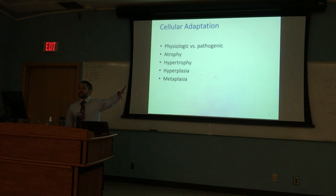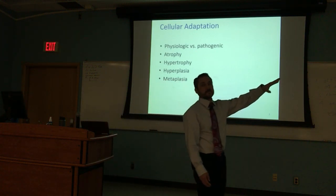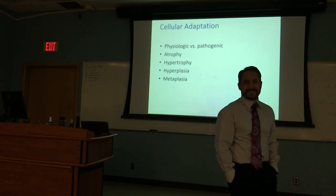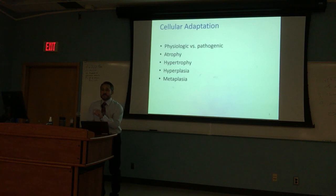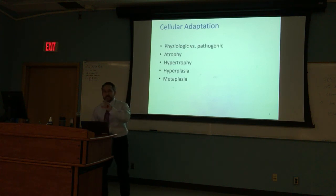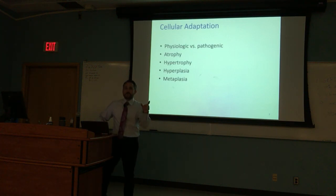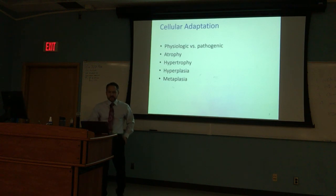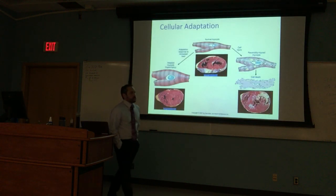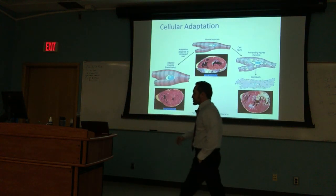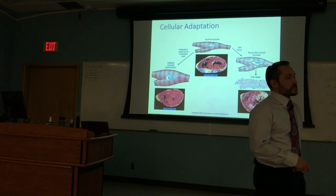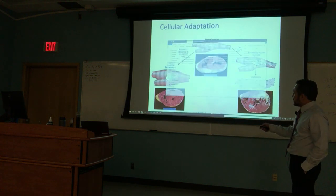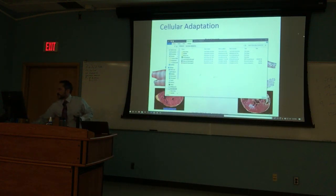There are a lot of great test questions that could come from this slide — these are level-one questions about definitions. Could I link a test question about metaplasia to Barrett? Absolutely. This is all testable material. Now let's look at these cellular adaptations one at a time, starting with myocardium — cardiac tissue.